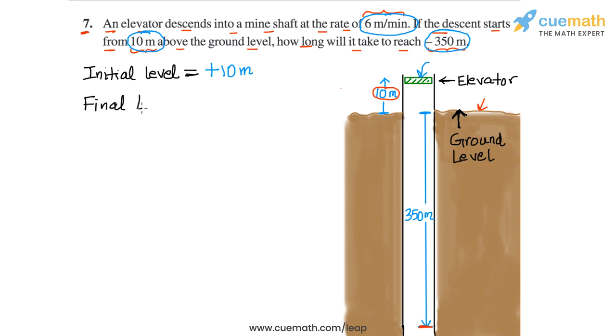The final level of the elevator is 350 meters below the ground, which we can write as minus 350 meters. So what will be the change in level?